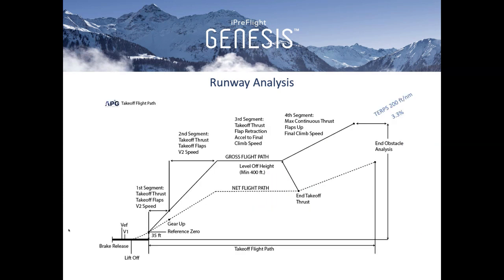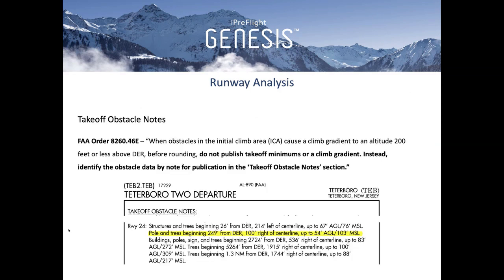The TERPS obstacle standard gradient is 200 feet per nautical mile, or 3.3%, to a given altitude — all engines operating. Based on terrain, if the climb gradient is higher and close-in obstacles are present within 200 feet of the runway, those obstacles aren't being considered. TERPS' only requirement is to publish a note identifying the obstacle — not publish takeoff minimums or a climb gradient. Instead, they identify the obstacle data by note for publication in the takeoff obstacle notes section. The FAA cannot list every obstacle exempt from a TERPS analysis because oftentimes there are too many, so instead they provide a general listing of obstacles in the area, which provides little to no benefit to the operator or a runway analysis provider.